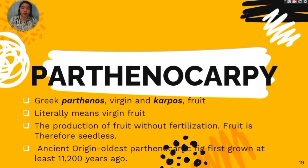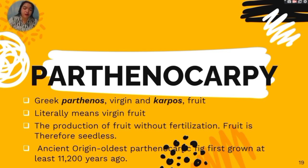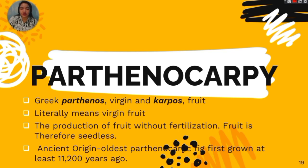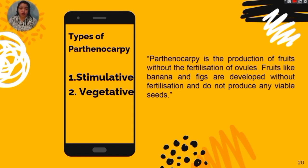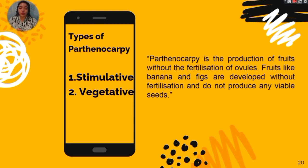Now let's go to parthenocarpy. The Greek word 'parthenos' means virgin and 'karpos' means fruit, so it literally means 'virgin fruit.' Parthenocarpy is the production of fruit without fertilization, and the fruit is therefore seedless. It has ancient origins — the oldest parthenocarpic fruit, the fig, was first grown at least 11,200 years ago. Parthenocarpy is the production of fruits without fertilization of the ovules. Fruits like banana and figs are developed without fertilization and do not produce any viable seeds.